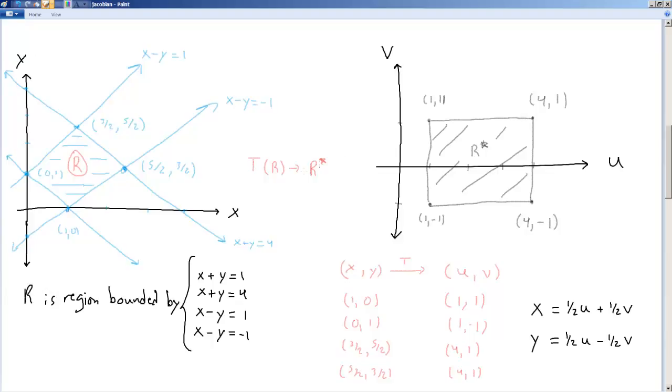And now I'm looking for the transformed region. So this is the transformation applied to R. That's what this bit of notation is saying. The transformation applied to R gives us R star or R prime, whatever you want to call it.